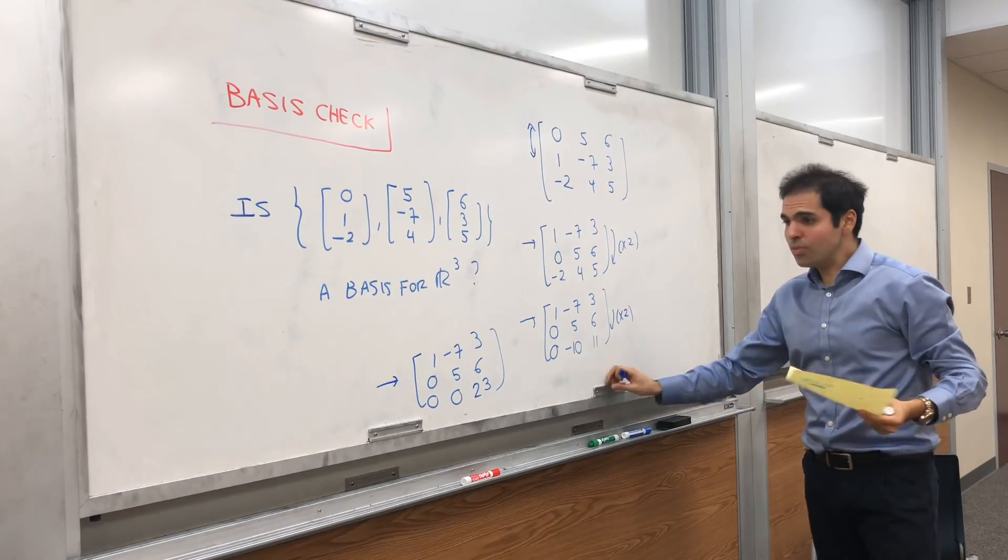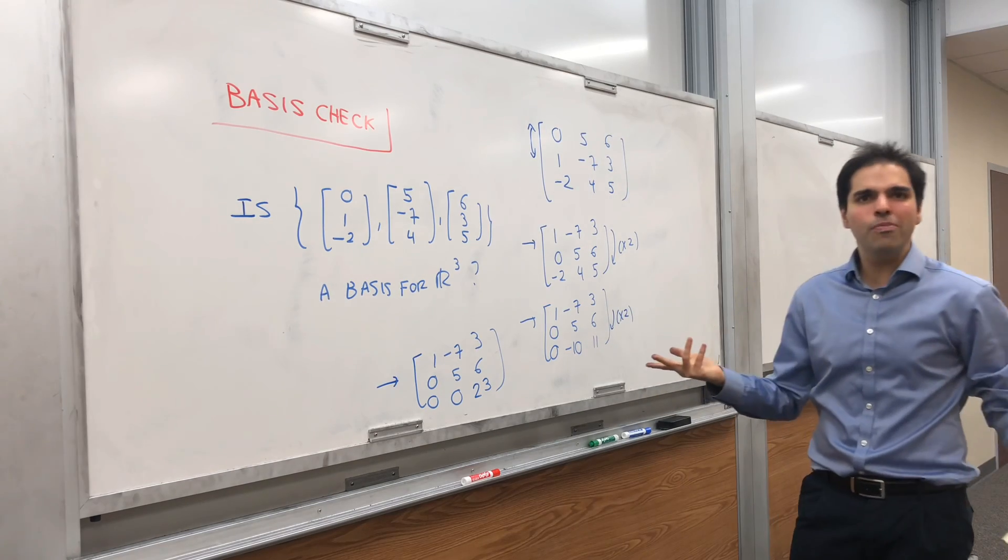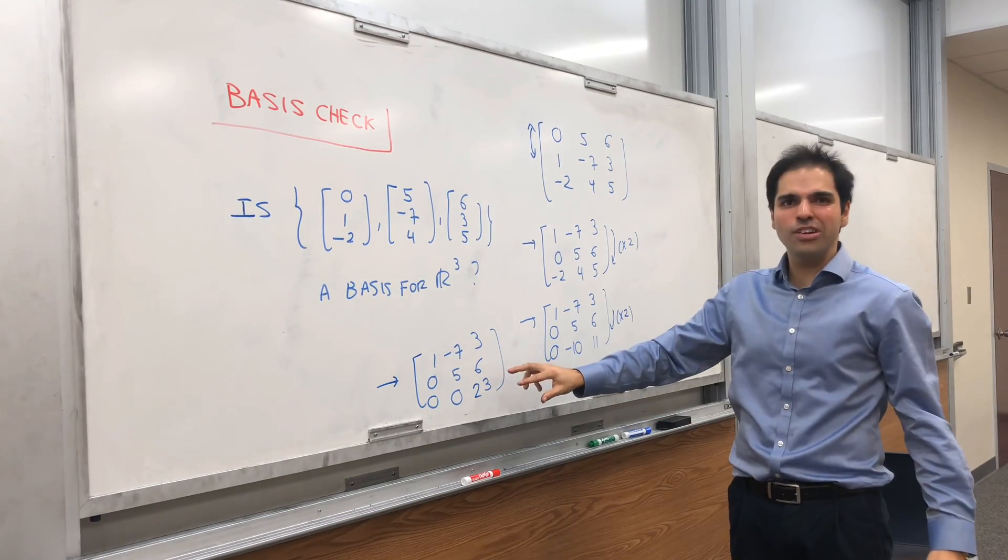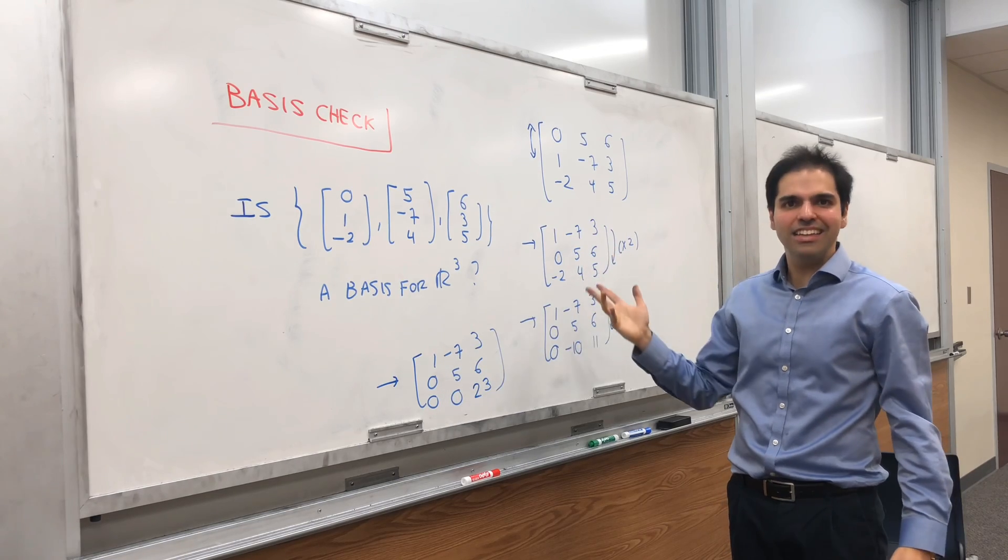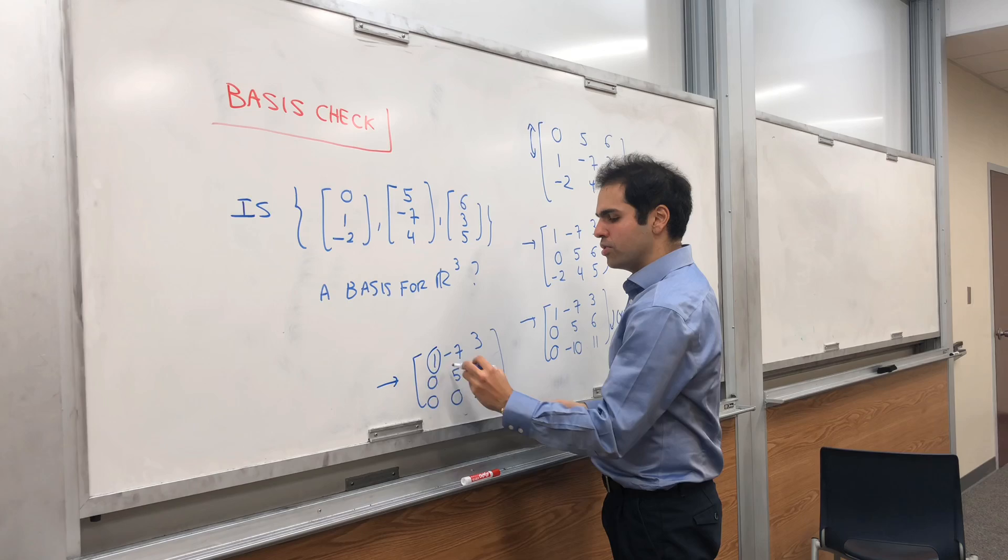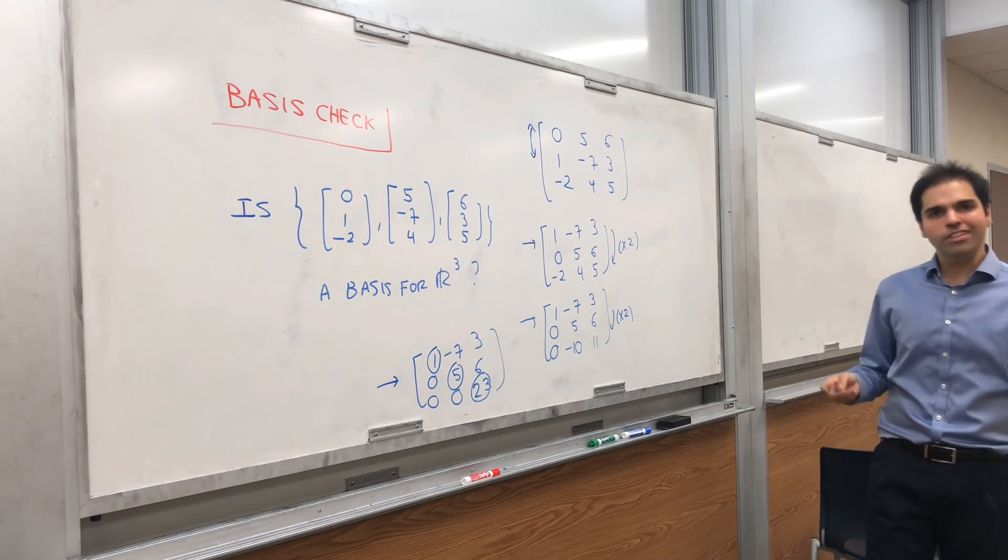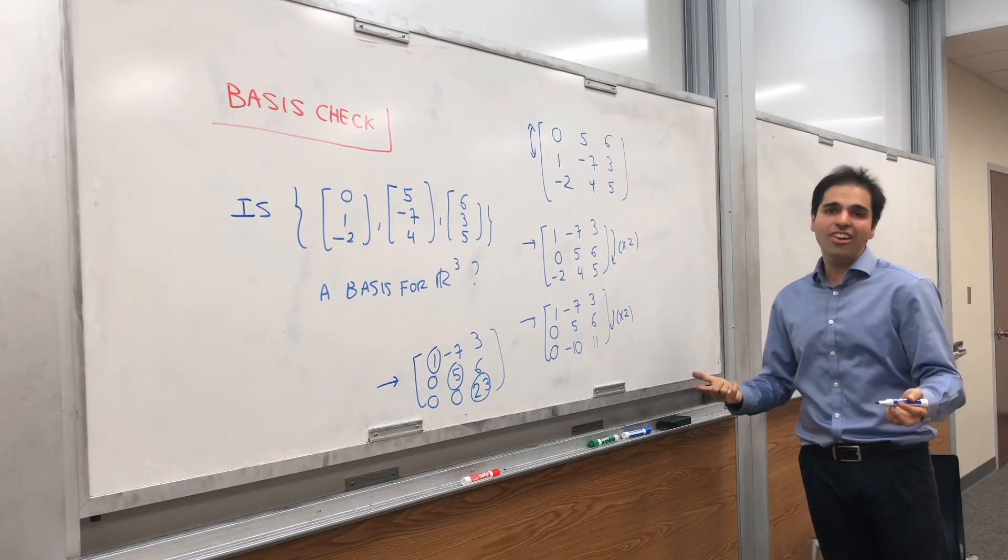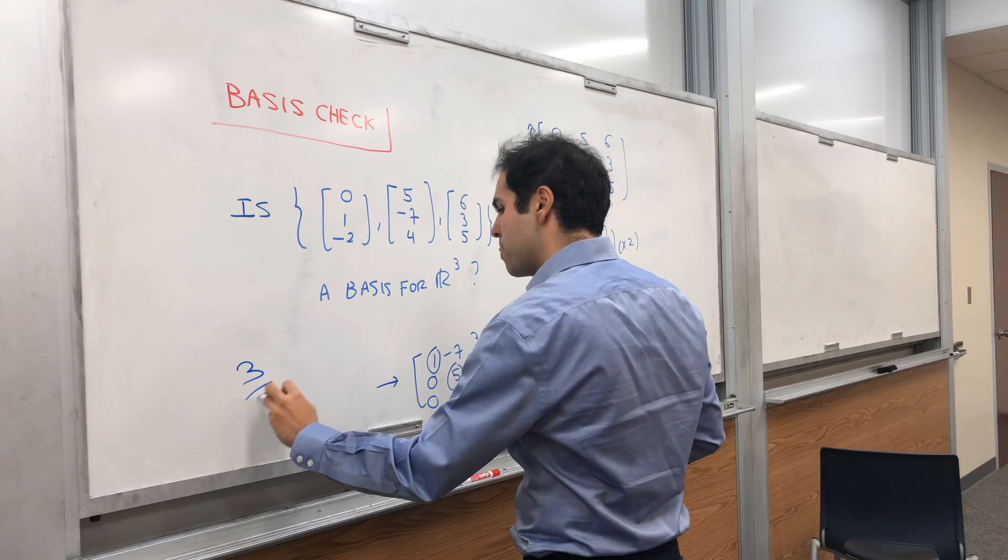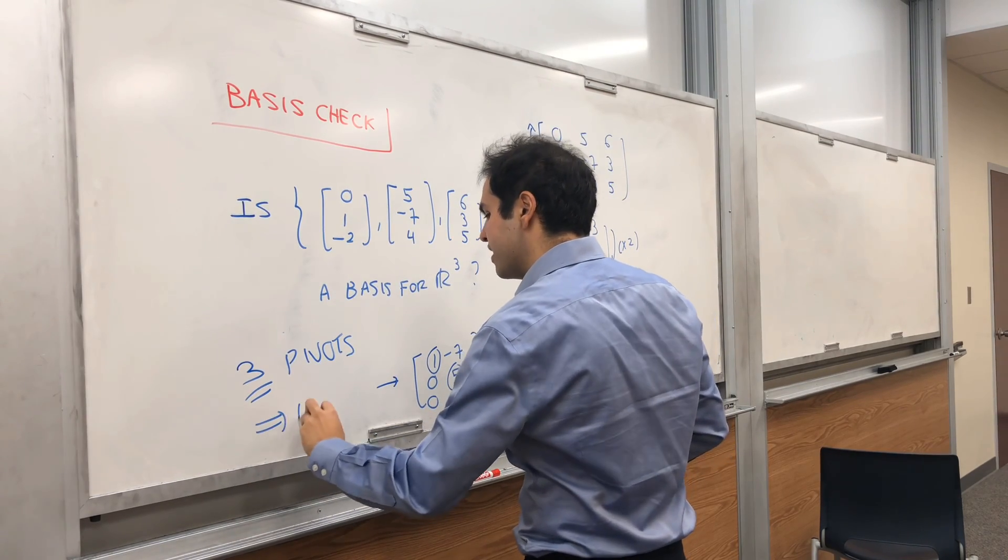Well, what's one way of checking something is a basis? The nice thing is there's this invertible matrix theorem, which says if a matrix is invertible, then automatically it's a basis. And to check a matrix is invertible, you could just look at the pivots. Notice it's a square matrix with three pivots, so automatically you can say that this is a basis. So, three pivots. And we get it's a basis.